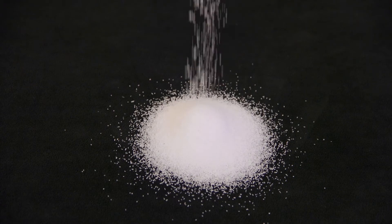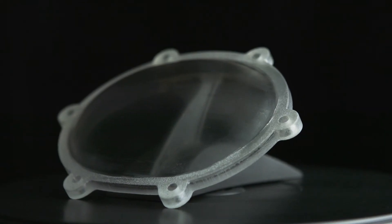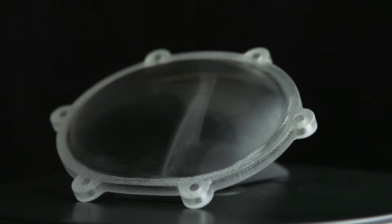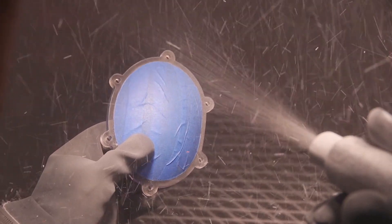Media blasting is not generally recommended because it can create small pits in the model surface. However, for a frosted surface finish, mask the parts of the model you do not want to look frosted and then media blast the unprotected area.